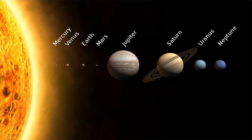The solar system formed 4.6 billion years ago from the gravitational collapse of a giant interstellar molecular cloud. The vast majority of the system's mass is in the Sun, with the majority of the remaining mass contained in Jupiter. The four smaller inner planets — Mercury, Venus, Earth and Mars — are terrestrial planets, being primarily composed of rock and metal.